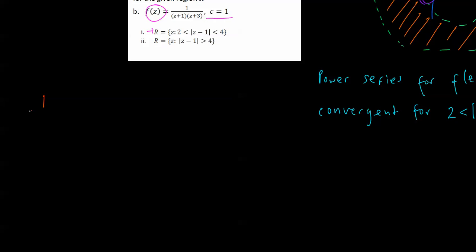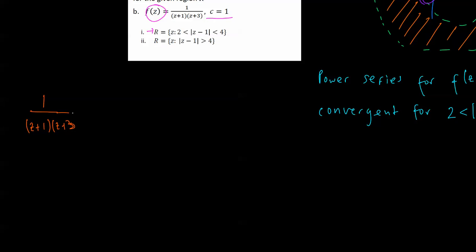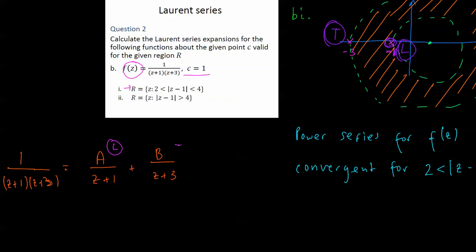The next thing to do is to use partial fractions. So 1 / [(z+1)(z+3)] equals some number a/(z+1) plus some number b/(z+3). The term a/(z+1) corresponds to the singularity at −1, so we're going to need a Laurent series for this term. And the function b/(z+3) corresponds to the singularity at −3, so we're going to need a Taylor series for this term. We need to solve for a and b.